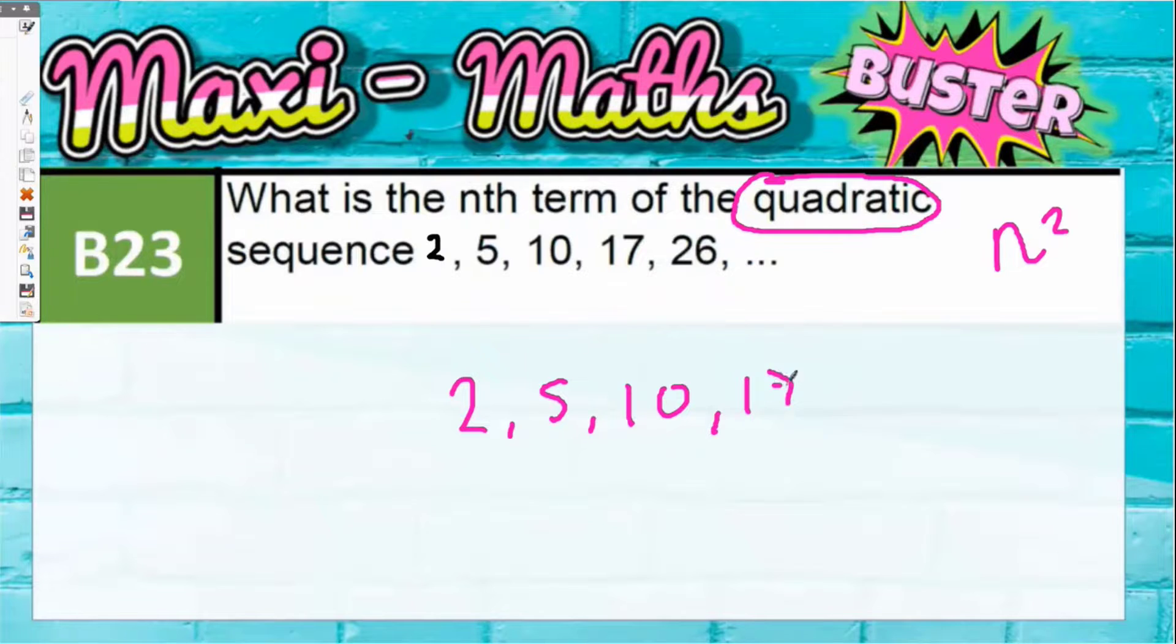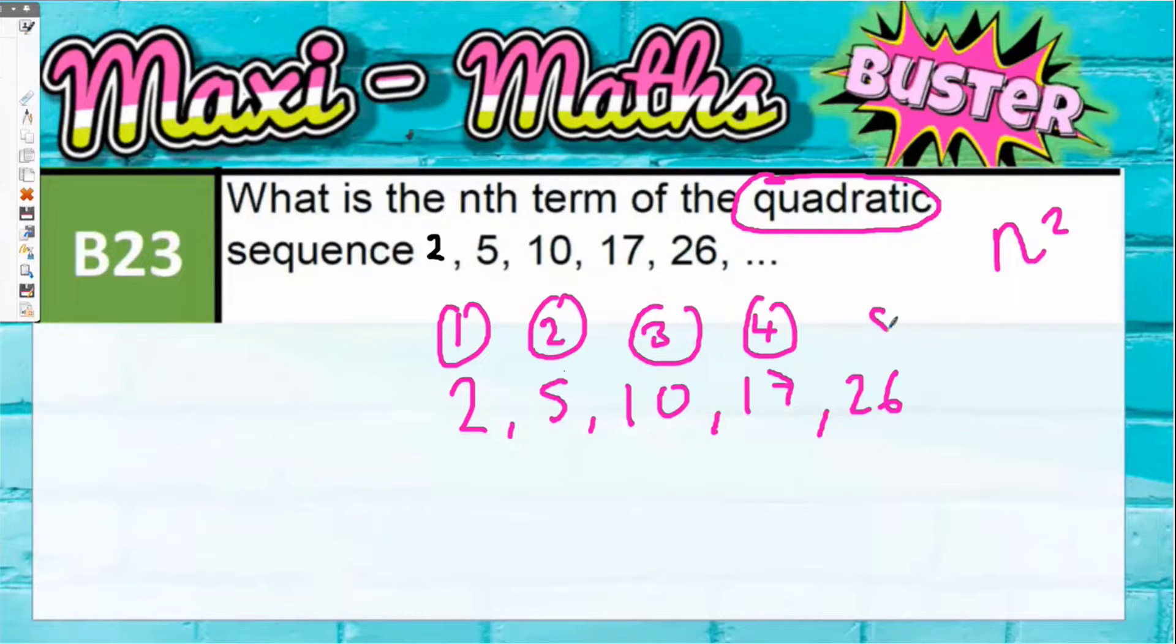So we're trying to find a rule that links position number 1 to the number 2, position 2 to 5, position 3 to 10, position 4 to 17, position 5 to 26.